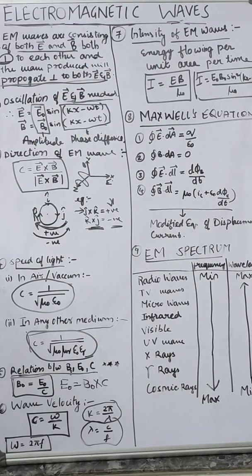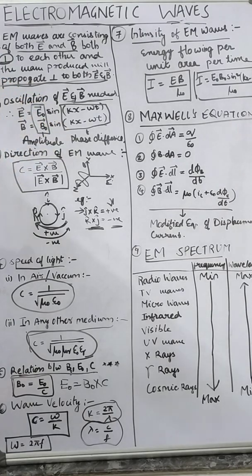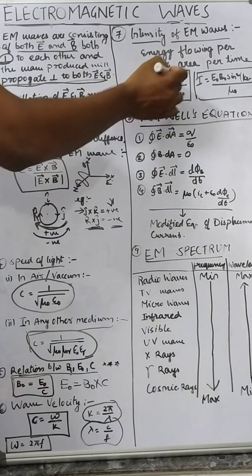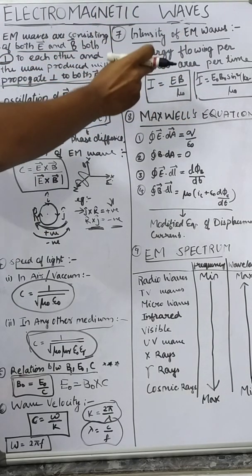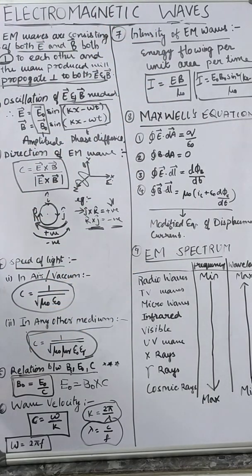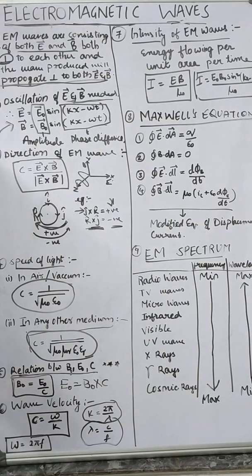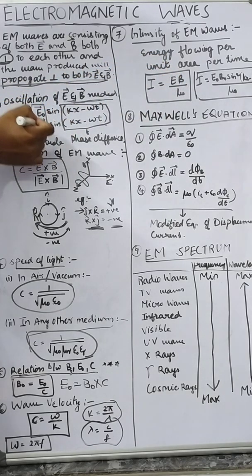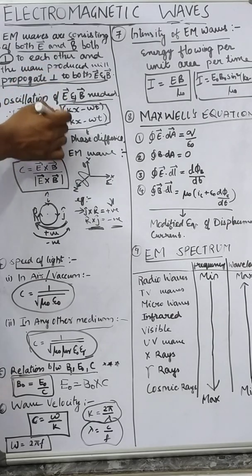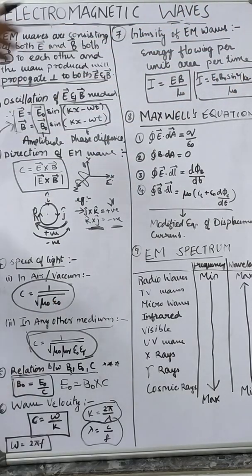Now let's write the intensity of an EM wave. Intensity is the energy that is flowing per unit area per time — how much energy flows in a unit area in a particular time. The simple equation is: I = (E · B) / μ0 — the product of electric field and magnetic field divided by the permeability. Using the wave equations, this becomes: I = (e0 · b0 · sin²(kx − ωt)) / μ0. This is Maxwell's equation.